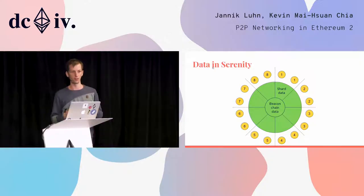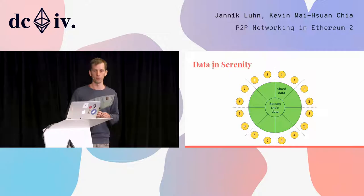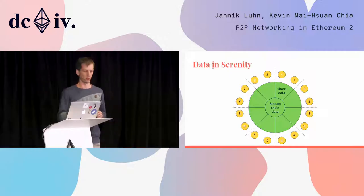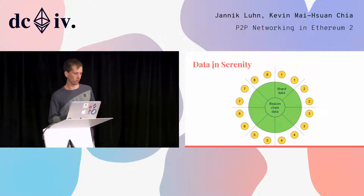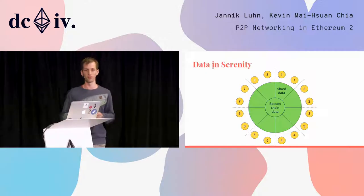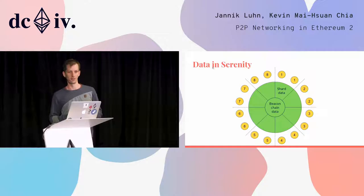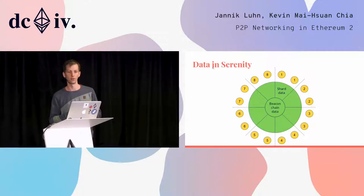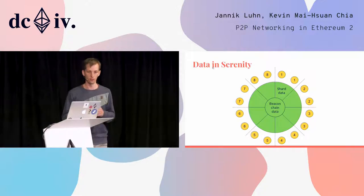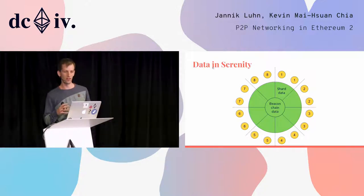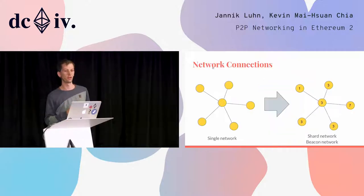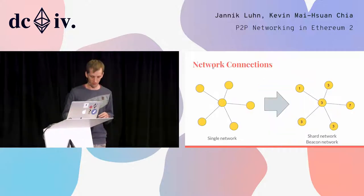That way we can save a lot of bandwidth. I plotted this in a picture — it's eight shards here but in reality it's a thousand, which are too many to draw. In addition to this shard data, we also still need some kind of global data that all nodes download. This is the beacon chain data.